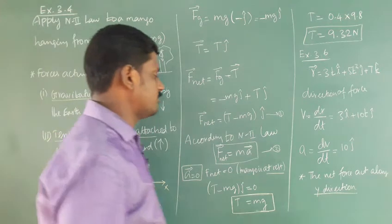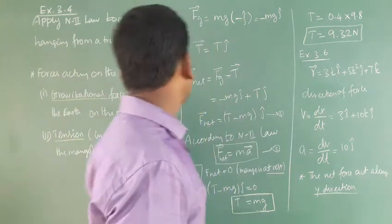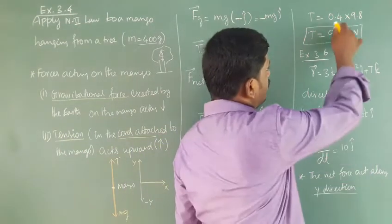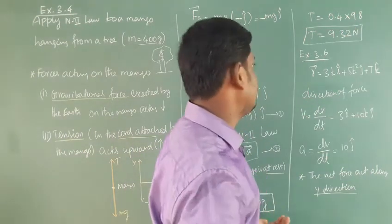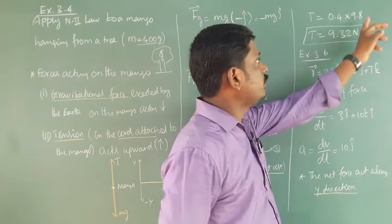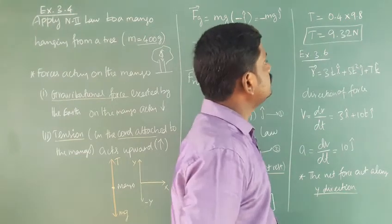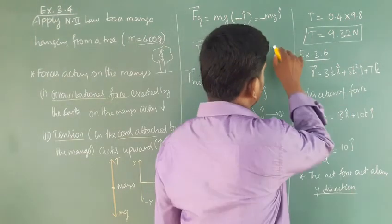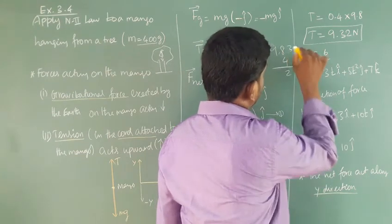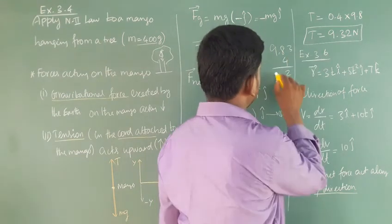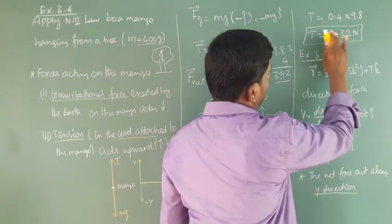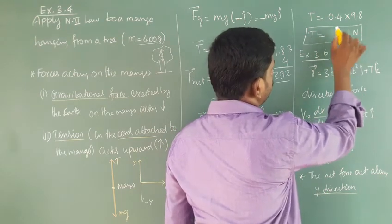We know the mass of the mango is 400 grams, which we convert to 0.4 kg. So T equals 0.4 times 9.8 meters per second squared. Calculating: 9.8 times 0.4 — 8 fours are 32, 9 fours are 36, giving 3.92. The tension is 3.92 Newtons.